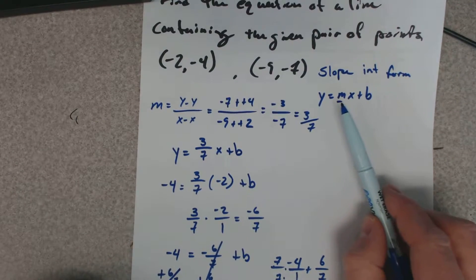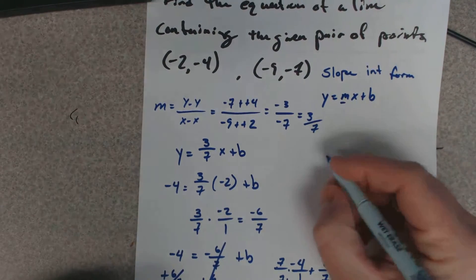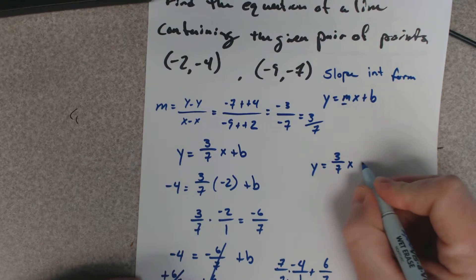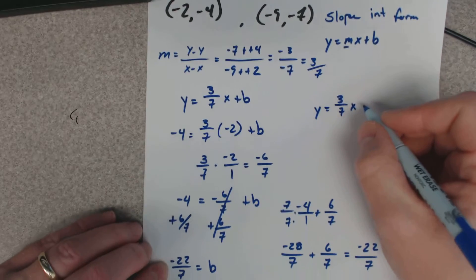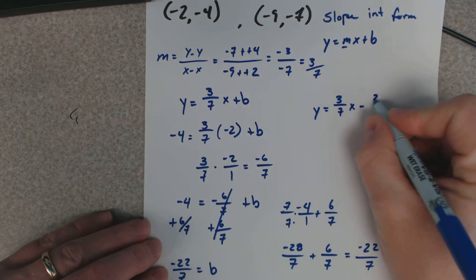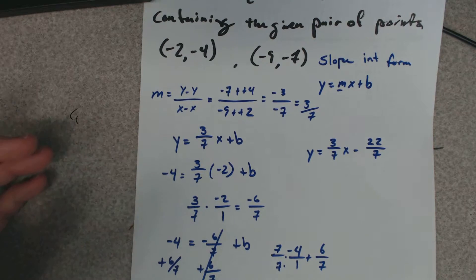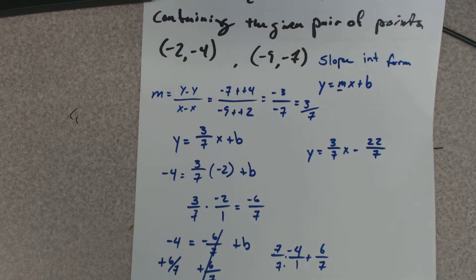So now I have both bits of information: I've got the slope and the y-intercept. So y equals the slope, which we said was 3/7, times x, and it's negative 22/7, so I'm gonna say minus 22/7. That's how you do all these linear questions asking for equations of a line.